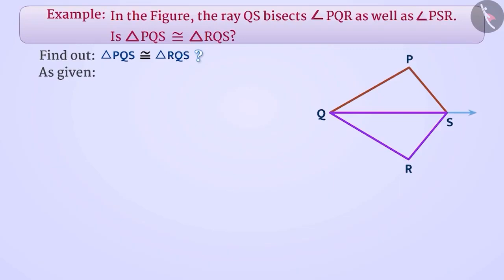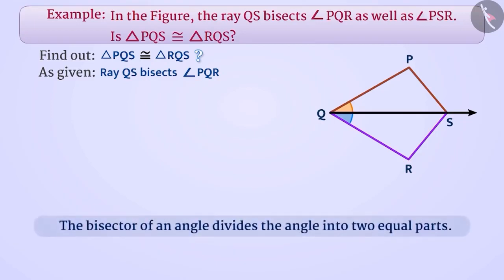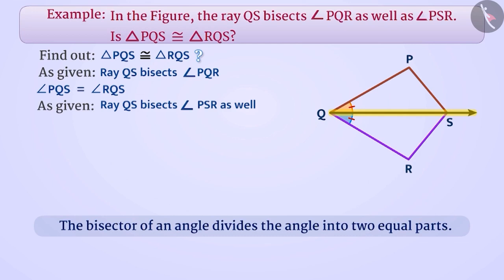We have been given that ray QS bisects angle PQR. We know that the bisector of an angle divides the angle into two equal parts. With this understanding, we can say that angle PQS is equal to angle RQS. Similarly, ray QS also bisects angle PSR, therefore we can say that angle RSQ is equal to angle PSQ.